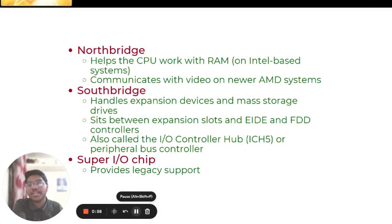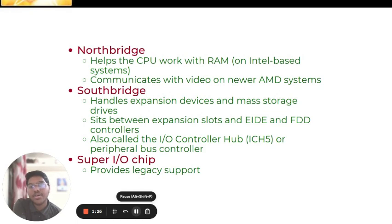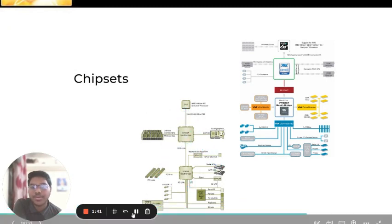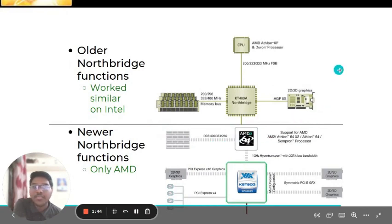There are two types of bridges present in a chipset: the Northbridge and the Southbridge. The Northbridge helps the CPU work with RAM on Intel-based systems and also helps communicate with video on newer AMD systems. The Southbridge handles expansion devices and mass storage of the drive, and also manages communication between expansion slots, EIDE and FDD controllers. The Southbridge is also called the I/O Controller Hub, ICH5 or peripheral bus controller. Super I/O chips provide legacy support. As you can see in the diagram, the Northbridge is directly connected to the CPU.